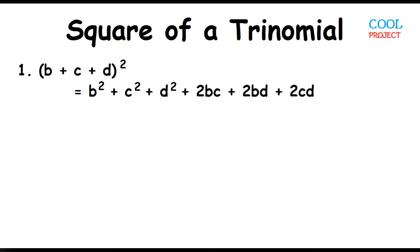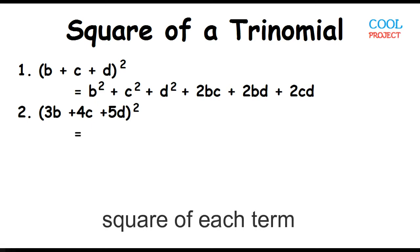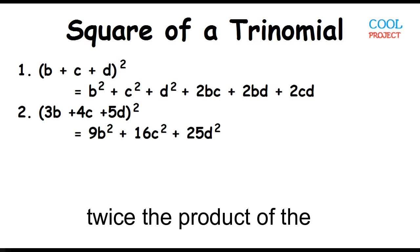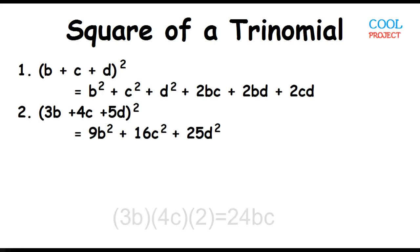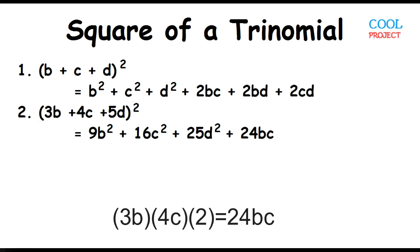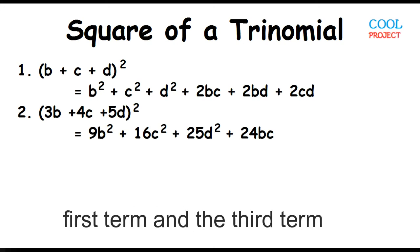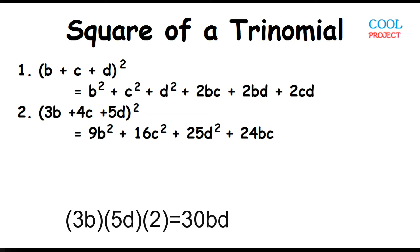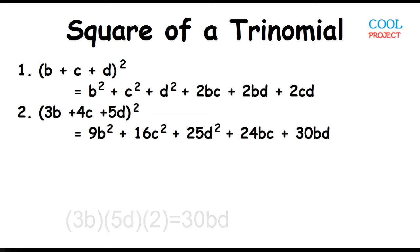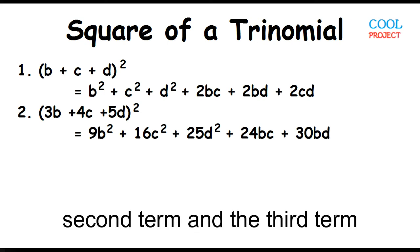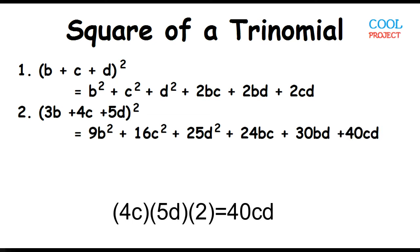Example number 2: The square of the quantity 3B plus 4C plus 5D. 3B times 3B is 9B squared. 4C times 4C is 16C squared. 5D times 5D is 25D squared. 3B times 4C is 12BC, times 2 is 24BC. 3B times 5D is 15BD, times 2 is 30BD. 4C times 5D is 20CD, times 2 is 40CD.